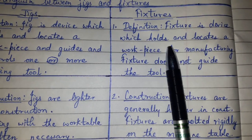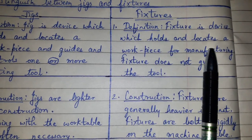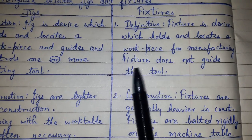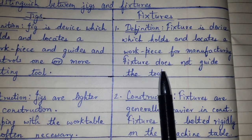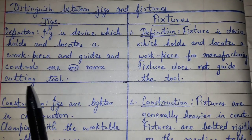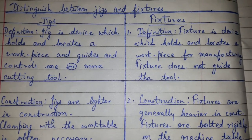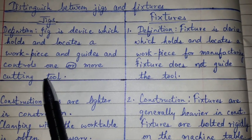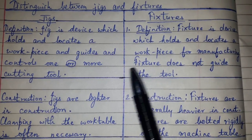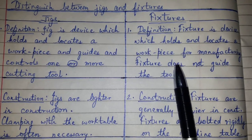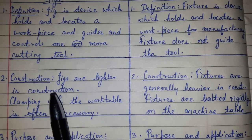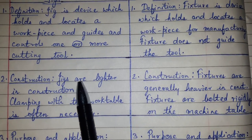A fixture is a device which holds and locates a workpiece for manufacturing. Fixture does not guide the tool. So this is the basic difference: a jig controls and guides the tool, whereas a fixture does not guide the tool.